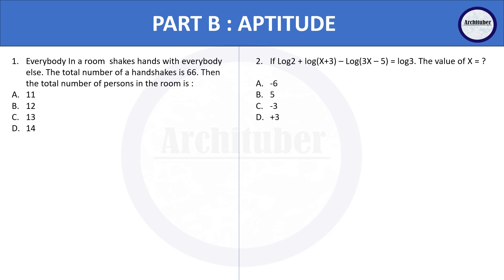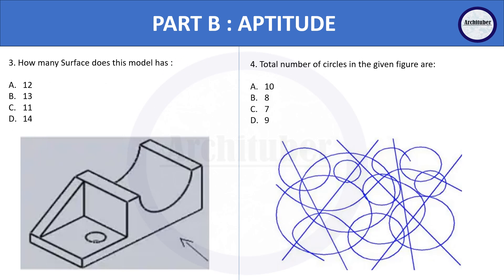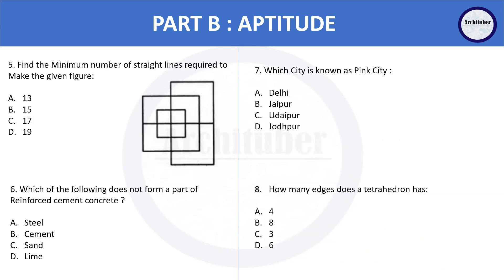Now discussing Part B — aptitude. You can see two questions on the screen. The first question is a recently asked question in NATA 2024, and the second is a logarithmic question, so try to solve them. Then we have: count the surfaces, count the numbers, count the number of circles. Try to solve such questions, and then find the minimum number of straight lines, plus a construction question.